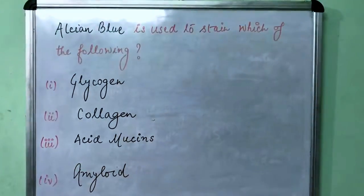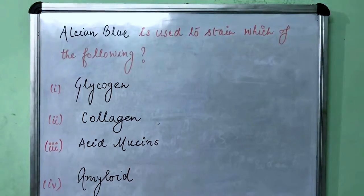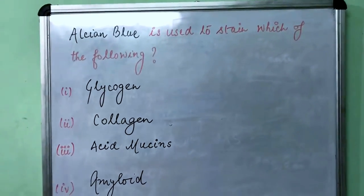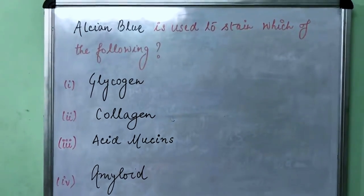The question that was asked in AIIMS May 2018 was: Alcian blue is a dye used to stain which of the following? And the options were glycogen, collagen, acid mucins, or amyloid.